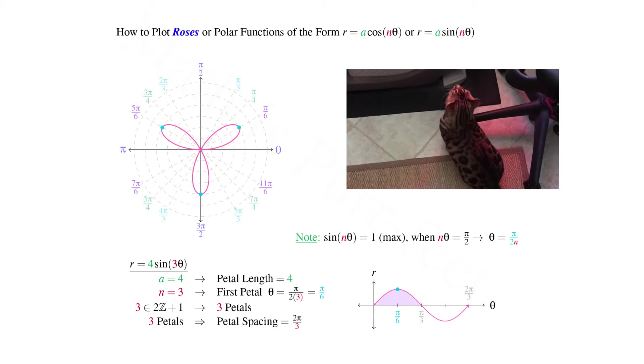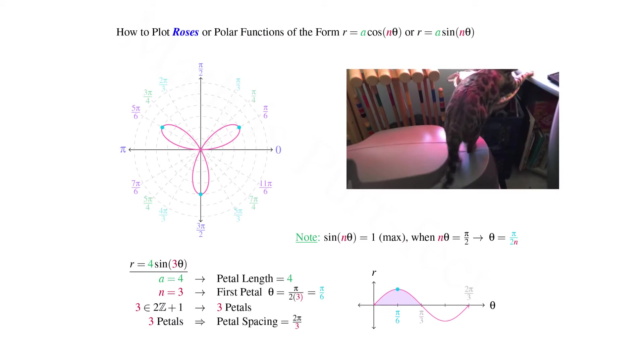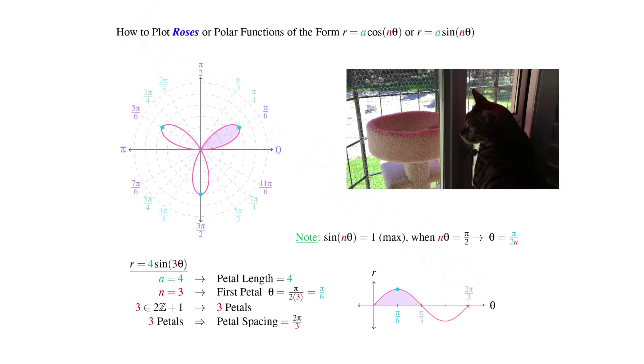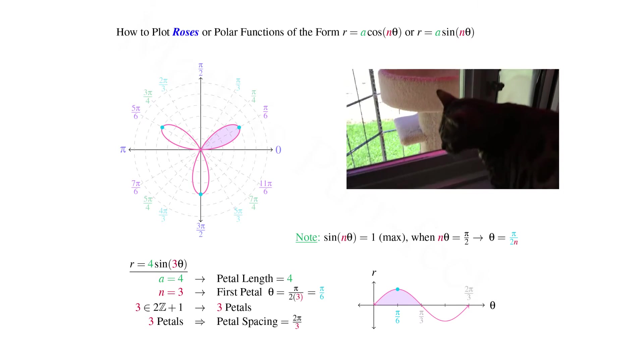Note that in the Cartesian plane, the first region between zeros has a positive radius and corresponds directly to our first petal as shown on the polar graph.